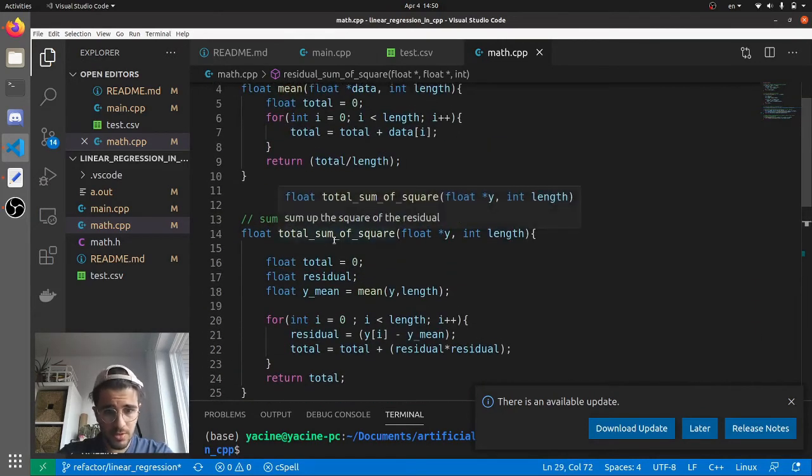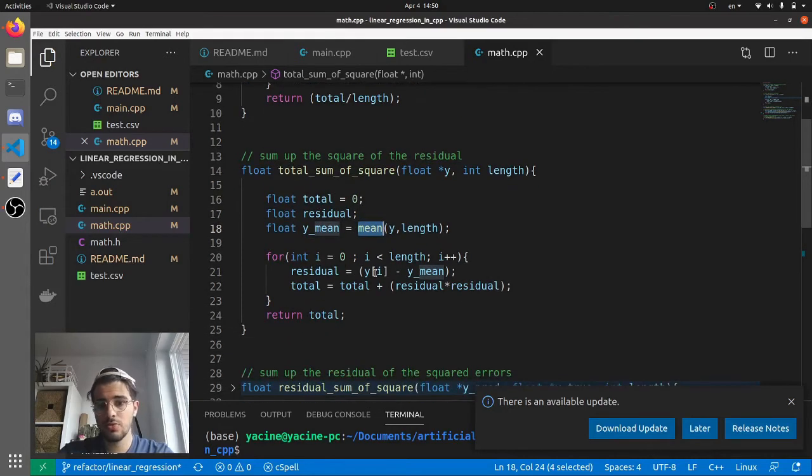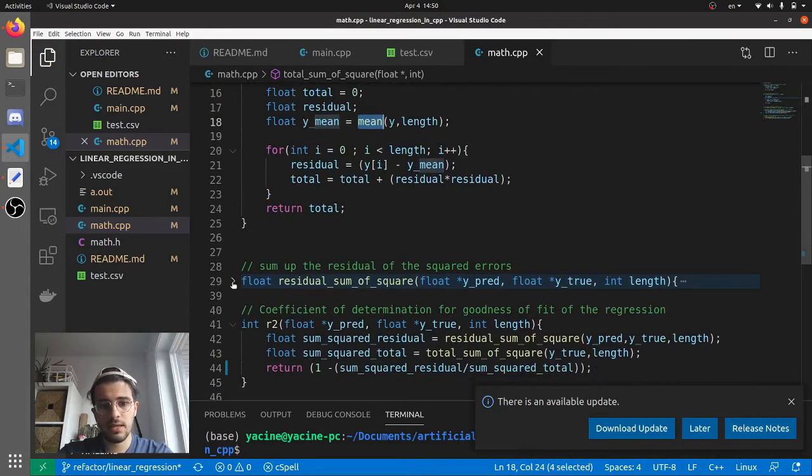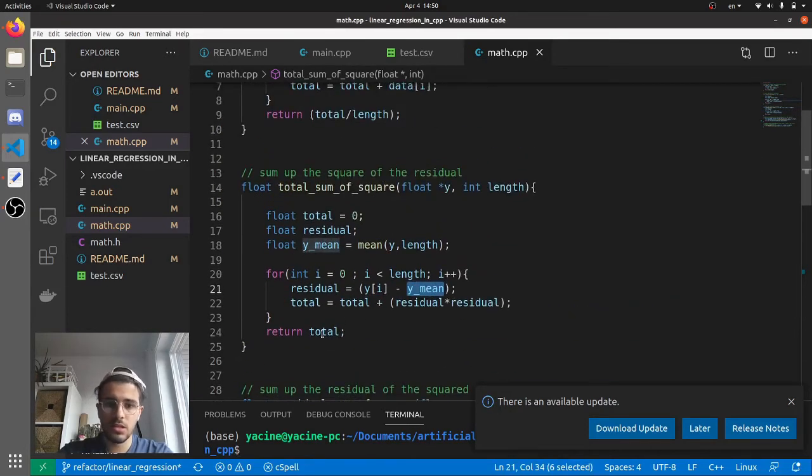And if we look at the total sum of squares, it's the same thing except we have a mean instead of the y_pred. So you calculate the mean beforehand and then you just do the same thing. So it's the same exact kind of code, except you have here y_pred, here you have just y_mean, and you do the same thing. You accumulate and then you return it.